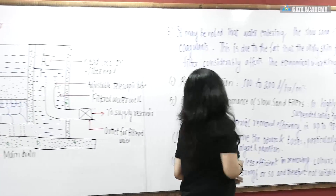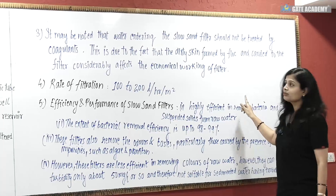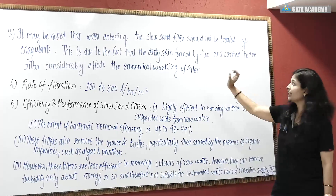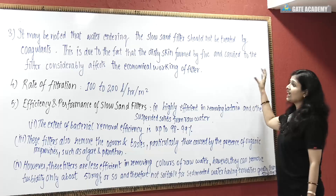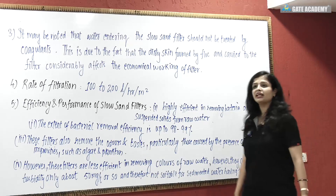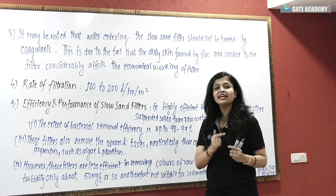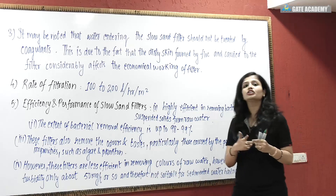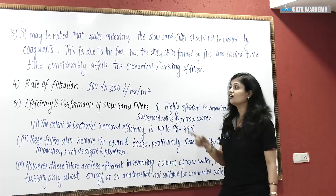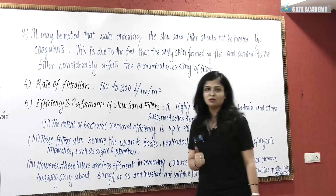It may be noted that the water entering the slow sand filter should not be treated with coagulant. This is because the dirty skin, or schmutzdecke, formed by the flocs carried to the filter affects the economical working of the filter. The rate of filtration is reduced in slow sand filters compared to rapid sand gravity filters — this is one of the main reasons we cannot always use them, and the tank area required is also increased. The rate of filtration is only 100 to 200 liters per hour per meter square.